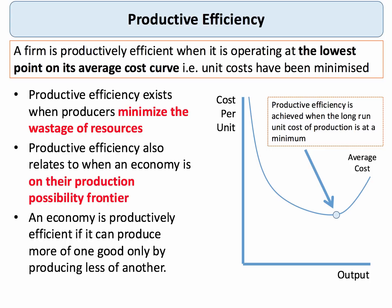A country is productively efficient if it can produce more of one good or service only by producing less of another — that's characteristic of being on the PPF, which represents combinations of two products that can be produced using all available resources efficiently. The key thing about productive efficiency is it's mainly to do with minimizing the unit cost of production, and one way to do that is to maximize the efficiency or productivity of your land, labor, and capital.